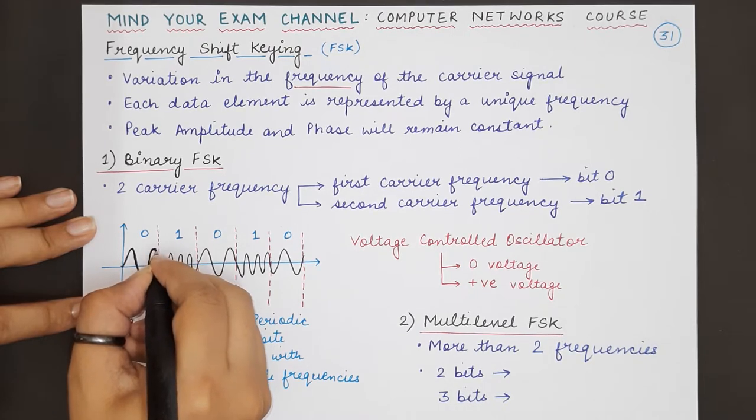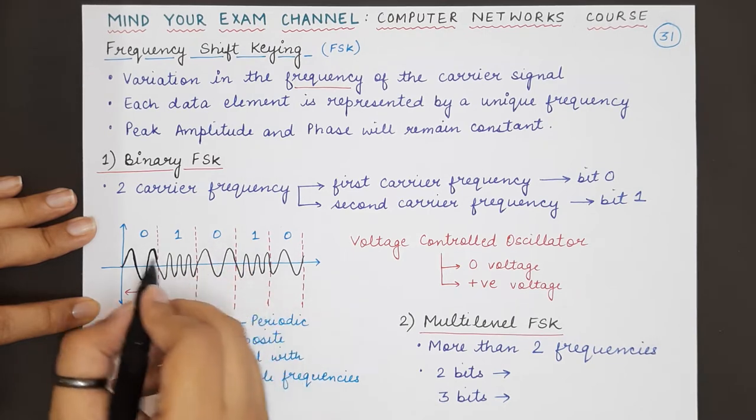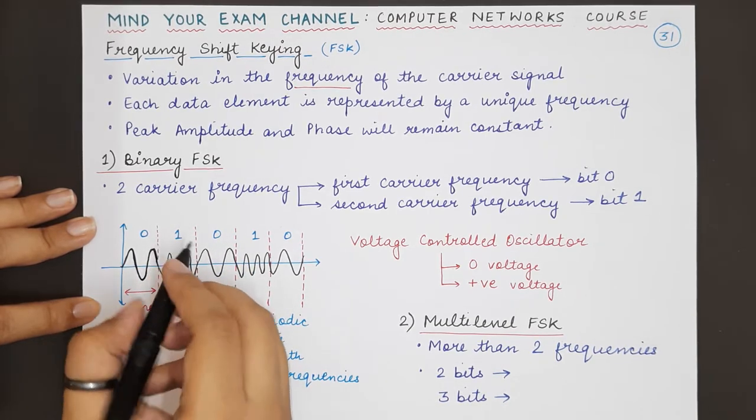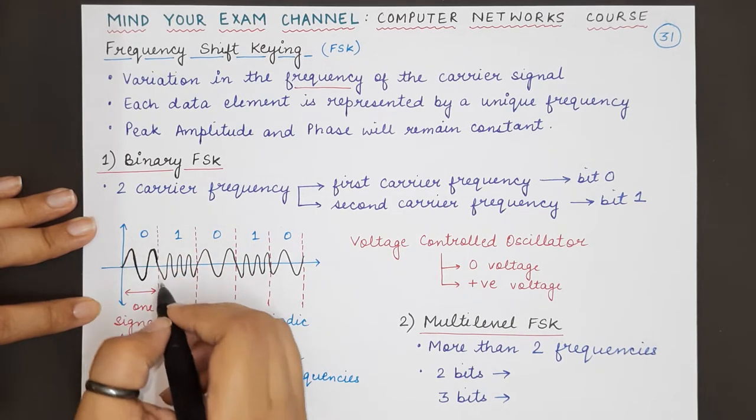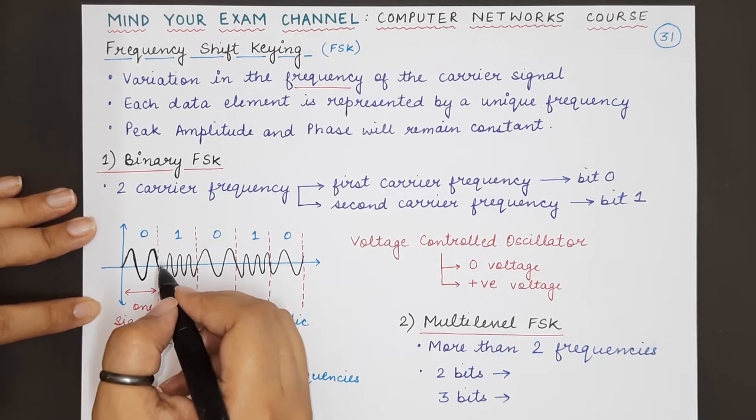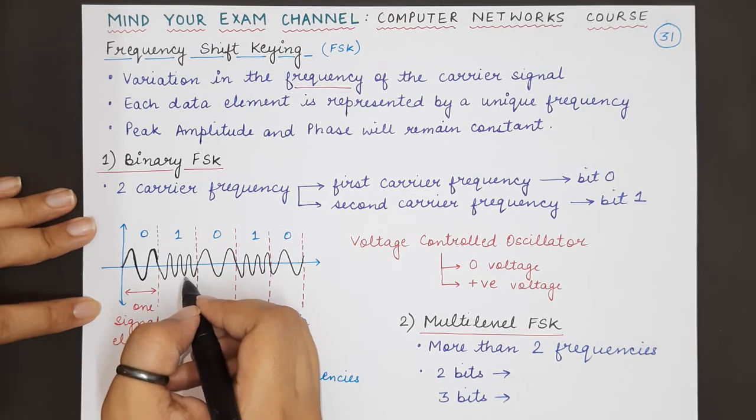As soon as the signal element changes and we have to transmit the second bit, which is 1, we will represent 1 with a second carrier frequency. In this case, the frequency has increased.